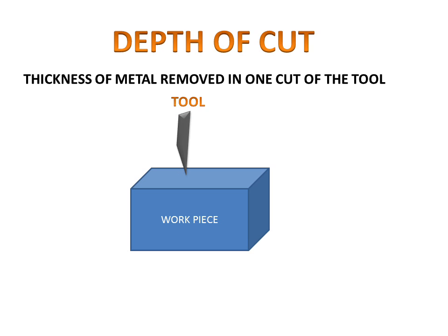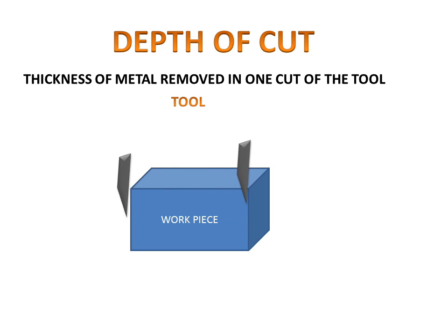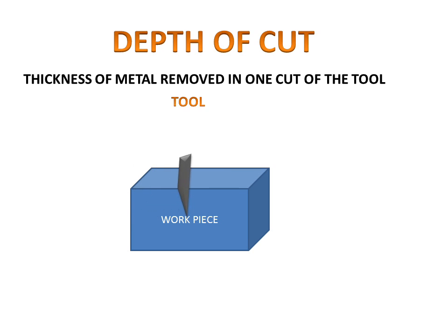Let's take an example. If the first cut is 1mm, then the second cut will be larger than the first one, and the third cut is larger than the second. So depth of cut is the thickness of metal removal in one cut of the tool.